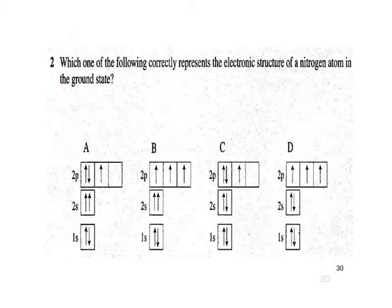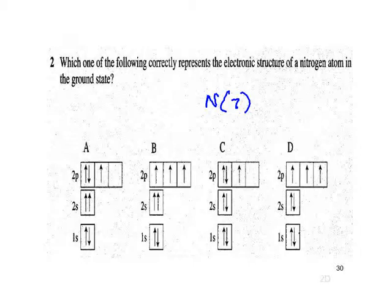Pause and give this one a go, please. Nitrogen is atomic number 7. Which one did you select? Yes, this is the answer here.